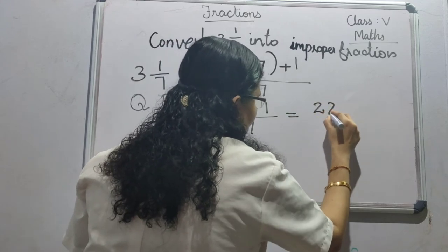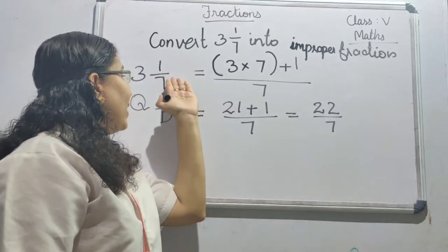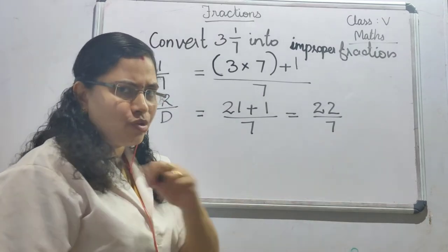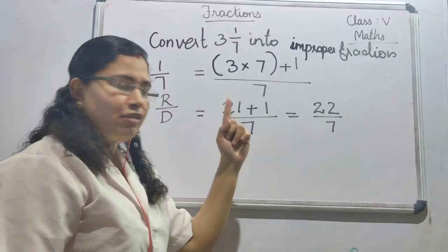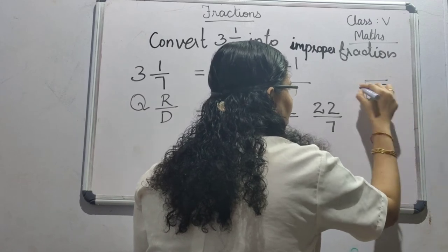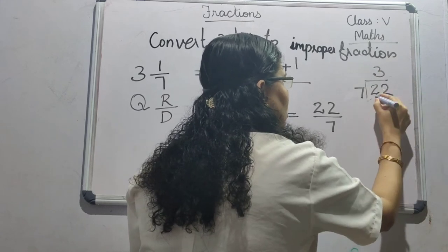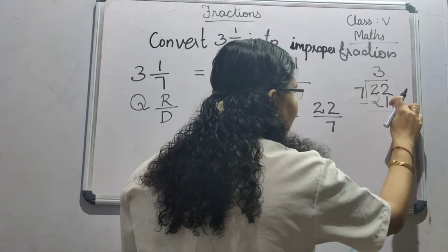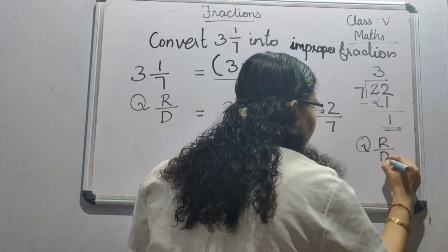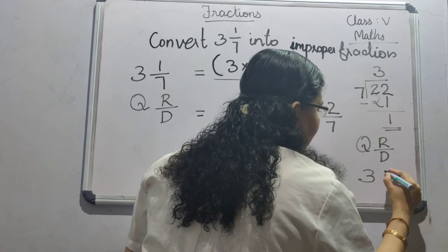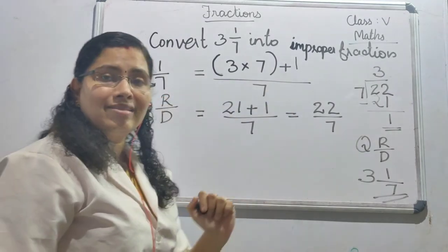So 3 times 7 is 21, plus 1, divided by 7 equals 22/7. So we have converted the mixed fraction 3 and 1/7 into the improper fraction 22/7. Let us check whether we have done it correctly by converting 22/7 back into a mixed fraction. 7 threes are 21, and 22 minus 21 gives remainder 1. So quotient is 3, remainder is 1, divisor is 7, giving us 3 and 1/7. Our answer is correct.